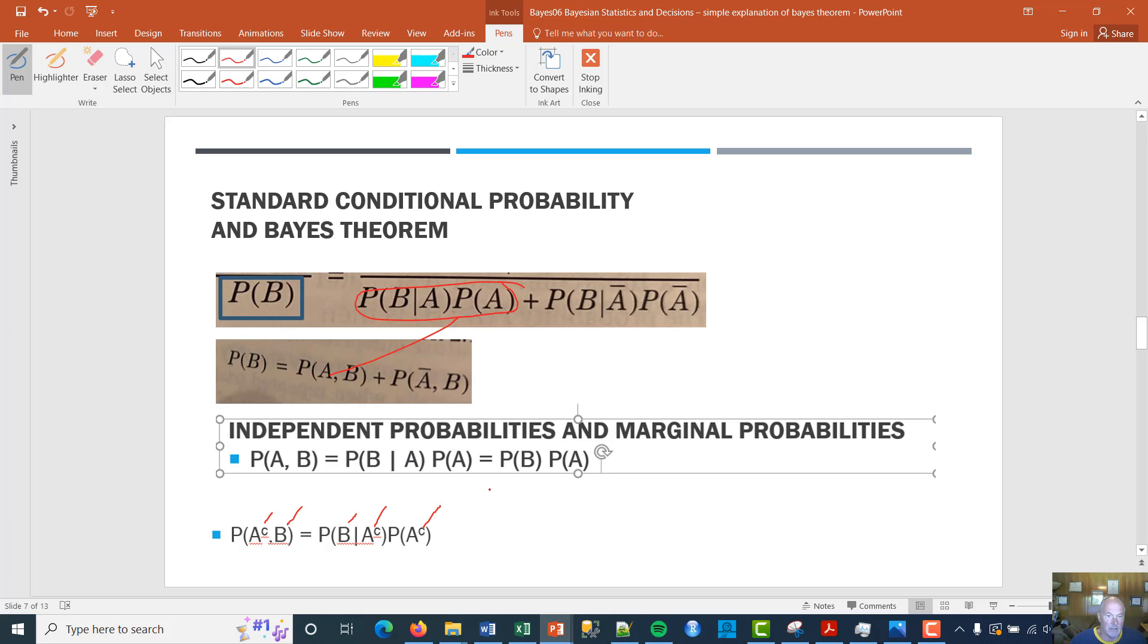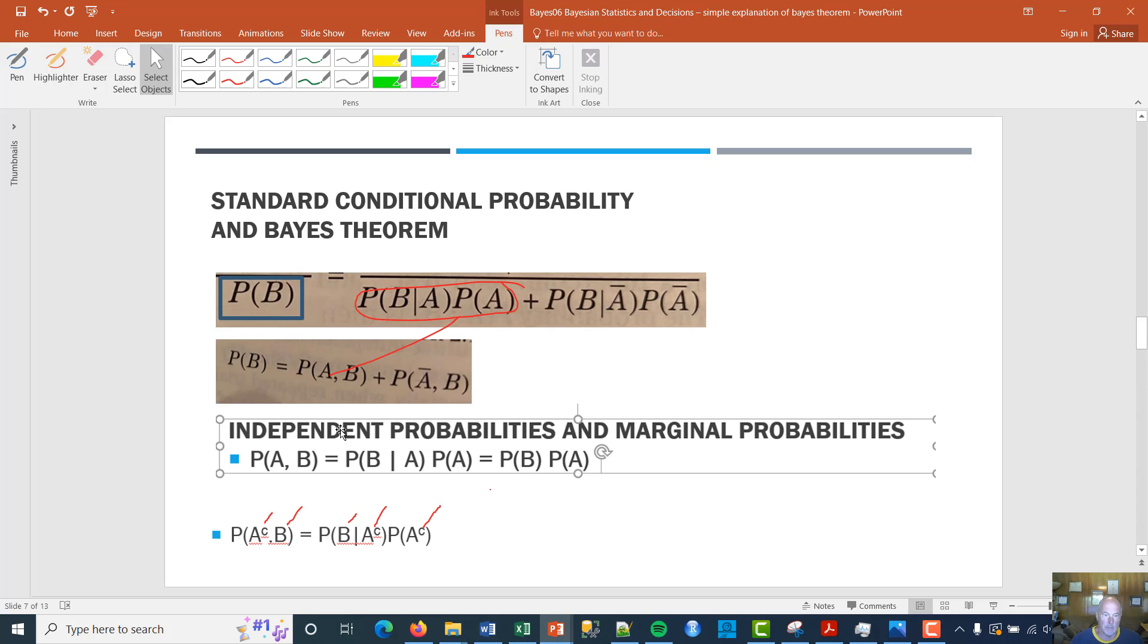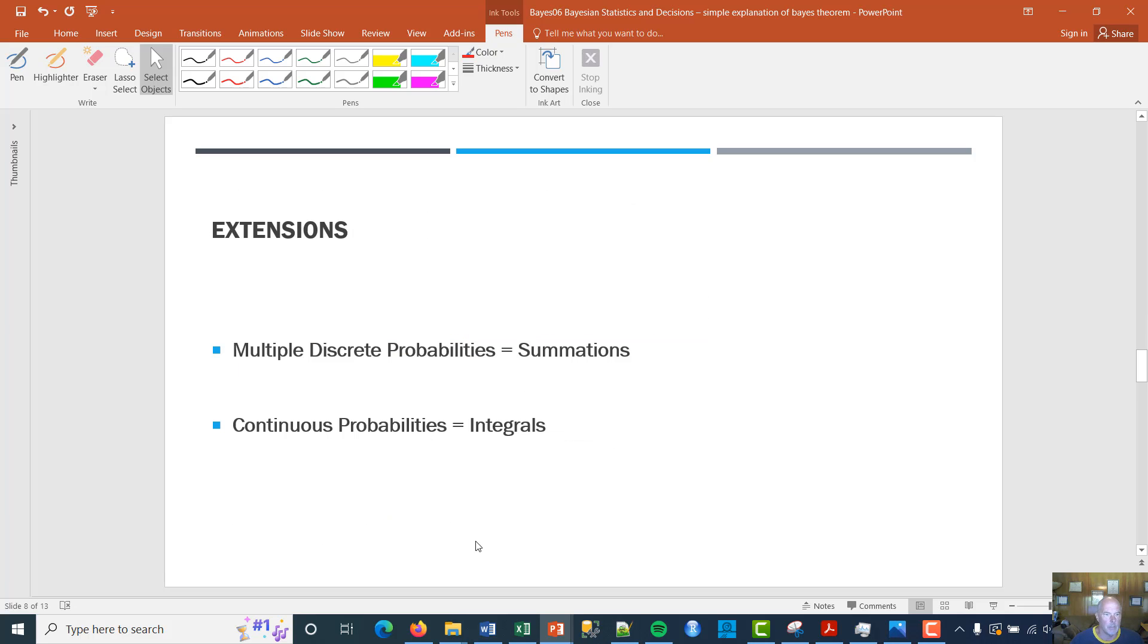So that's pretty much it. That's it in a nutshell for a very simple base formula, right? Two events and then extensions, natural extensions of this. If we have three events, four events, a hundred events, then essentially what we do in the denominator, sorry, is this becomes a summation, right? So it's a summation here of two. And then you can just use the summation sign against all those different probabilities and then continuous probabilities essentially is just integrals. You integrate over the space. And so that's it in a nutshell.